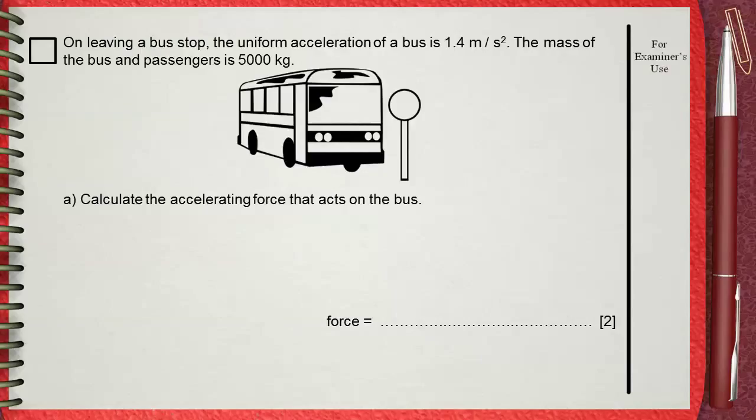On leaving a bus stop, the uniform acceleration of a bus is 1.4 meters per second squared. The mass of the bus and passengers is 5000 kilograms. A. Calculate the accelerating force that acts on the bus.